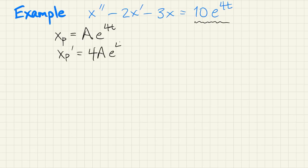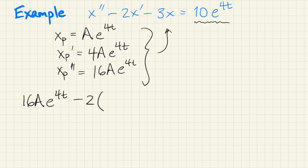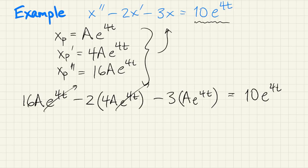So we compute its derivative and its second derivative. Put all that back into the original equation. So x double prime minus 2x prime minus 3x equals f of t. Every term has that e to the 4t in it, so they all cancel out. And we're just left with 5a equals 10, so that tells us a is equal to 2. And that tells us xp.